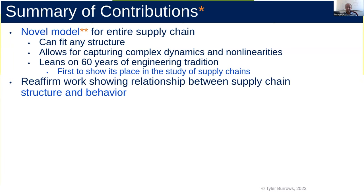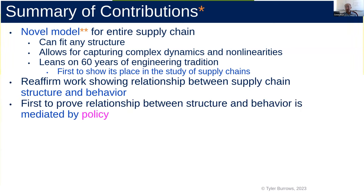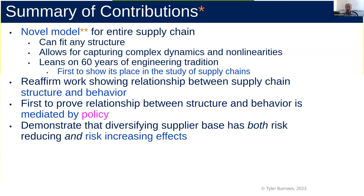Some of the big themes you're going to see are the relationship between the structure of the relationship between firms and the behavior of those firms, and especially the role of policy. Here I don't really mean public policy — this is firm policy, this is how firms act and the way they make their decisions. We demonstrated, at least within the assumptions of this model, that diversifying the supplier base — a big theme for firms since the pandemic — has both risk-reducing and risk-increasing effects, and that the policies firms choose can affect this outcome. This work is forthcoming in one of the major computer science and control theory conferences and is patent pending.